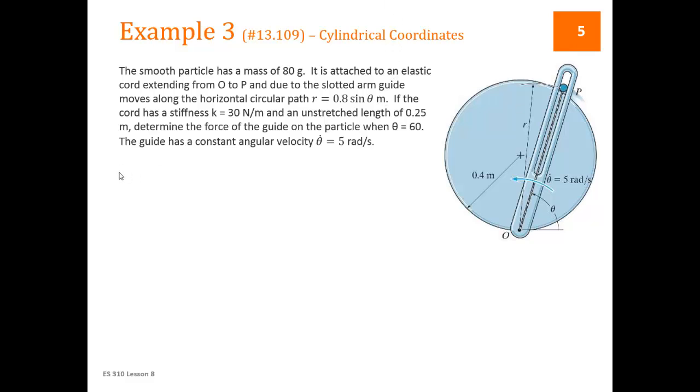In cylindrical coordinates our expressions are all in terms of r, r dot, or r double dot, theta, theta dot, or theta double dot. Let's start writing out what we know about r and what we know about theta. r is given, we have an expression for r. r equals 0.8 sine of theta. We also know that the theta we're interested in is 60, and we have theta dot of 5, and that's a constant. So theta double dot is equal to 0.